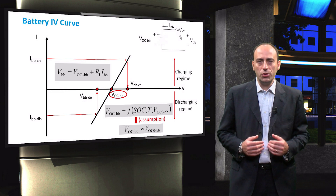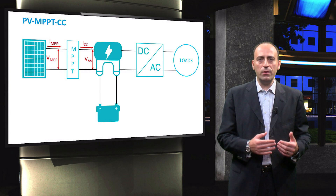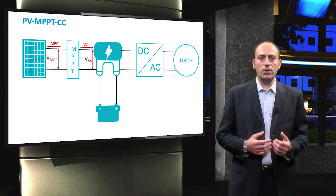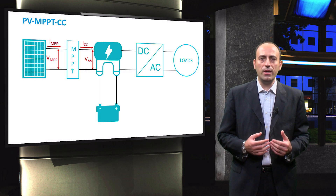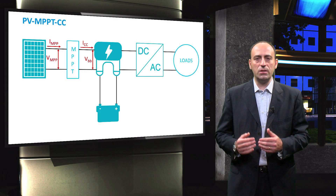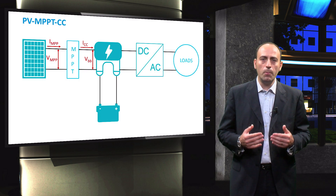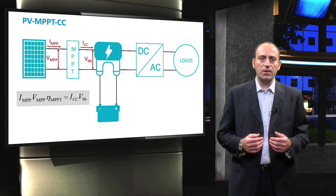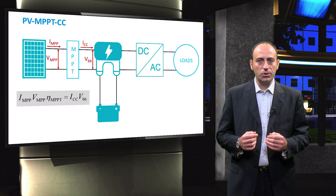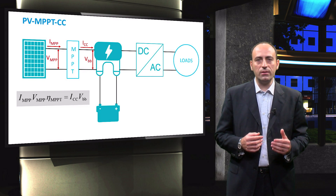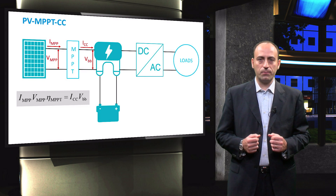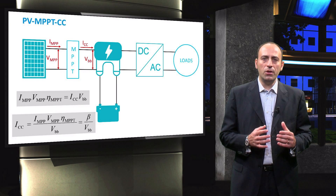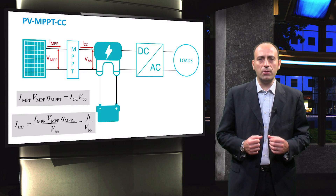Going back to the topology of the PV system, let us look at how the power is transferred from one component to the other. First, we start by looking at the left-hand side of the system topology. Here, the power generated by the PV modules, derated by the efficiency of the maximum power point tracker, is equal to the power received at the input port of the charge controller. From this equation, an expression for current entering the charge controller ICC is obtained. To simplify the calculations in the later stages, the numerator of the ICC equation is represented by a variable beta.